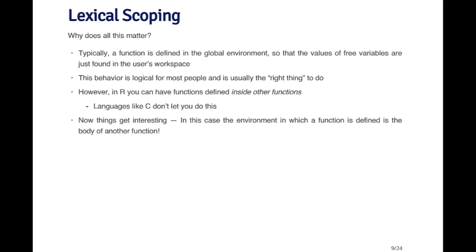The key difference in R is that you can define functions inside of other functions. For example, a function can return another function as its return value. So most functions return a list, vector, matrix, or data frame, but it is possible to return another function. If that's the case, the function that gets returned was defined inside of another function, so the environment in which it was defined is not the global environment — it's really the inside of that other function. This is when things get interesting, and when the scoping rules really have an impact on what you can do.